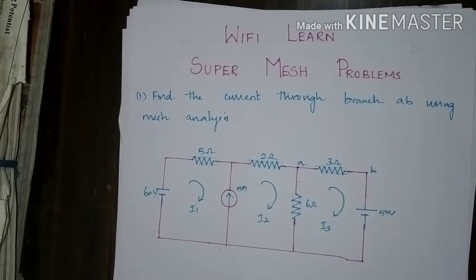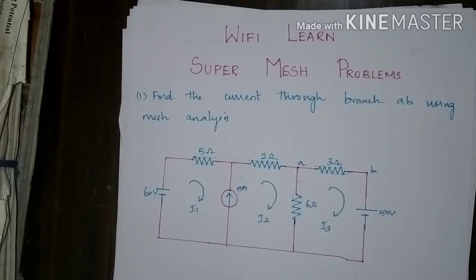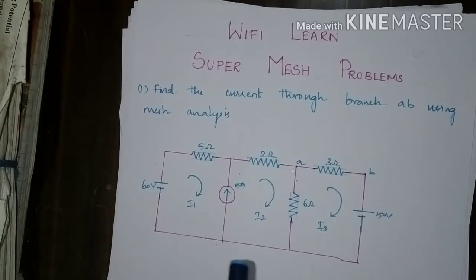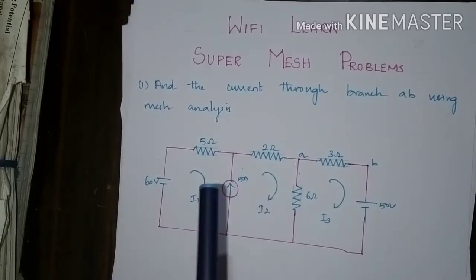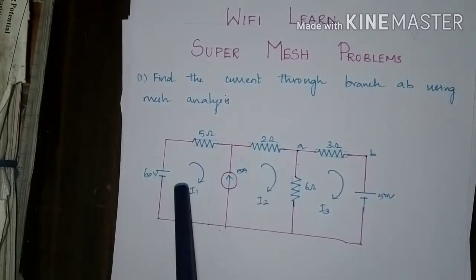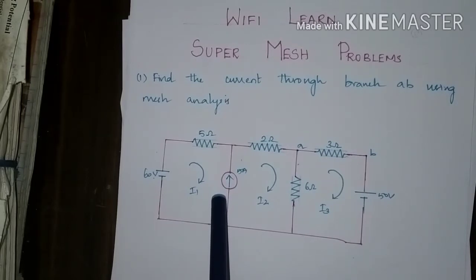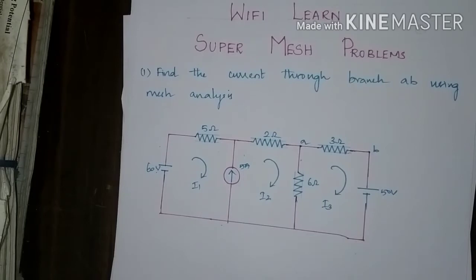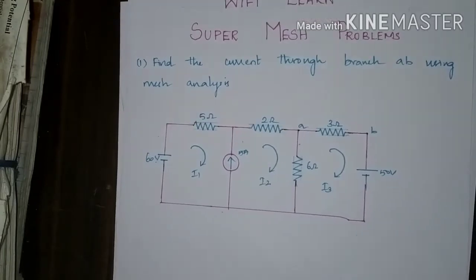Hello everyone, welcome to Wi-Fi Learn. In this video we can see about super mesh and super mesh problems. A super mesh is a mesh when there is a current source contained between two essential meshes. This current source leads to one equation that incorporates two mesh currents, I1 and I2. Once this equation is formed, an equation is needed that relates these two mesh currents with the current source.